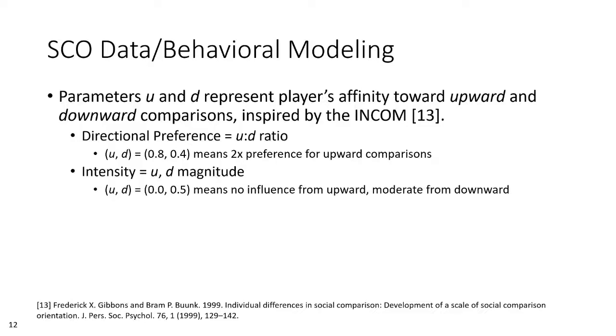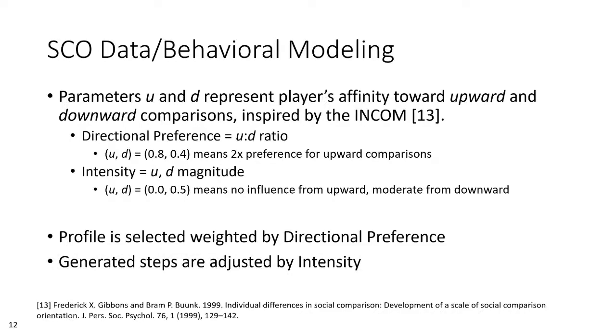The SCO behavior model directs a simulated player's behavior when presented with a programmatic version of the exercise we intended to deploy to our human players. The simulated players were programmed to select one of the four profiles at random, weighted by their U and D values. Their choice then modified their steps and self-reported motivation, based on the magnitude of their parameters. So how does the AI agent react in response to these simulated players?